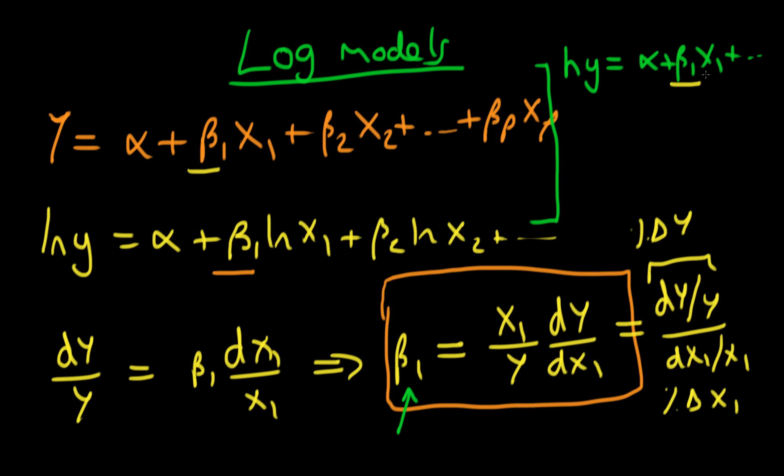Because we haven't logged x1, we're talking about what is the effect of a level change in x1 in percentage terms on y. That's the case if I have a log dependent variable. If I have a non-log dependent variable and I have a logged independent variable, what does beta 1 now represent? Beta 1 represents in this context the increase in y in terms of its units that would be associated with a 1% increase in x1.